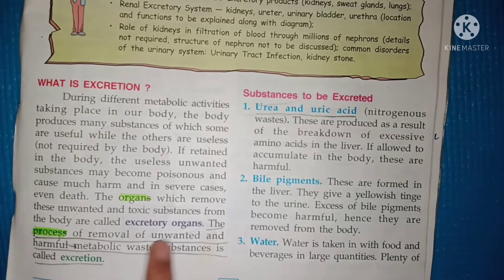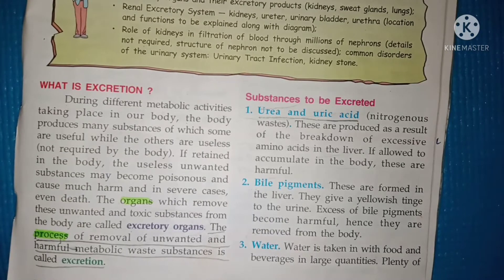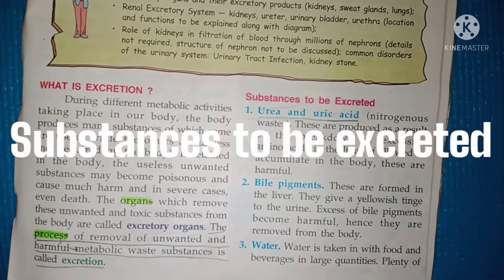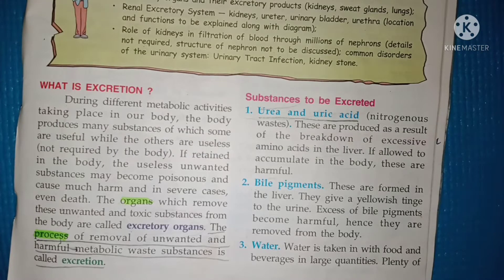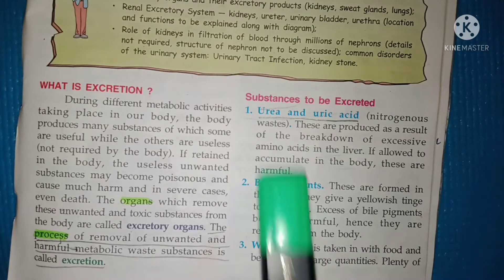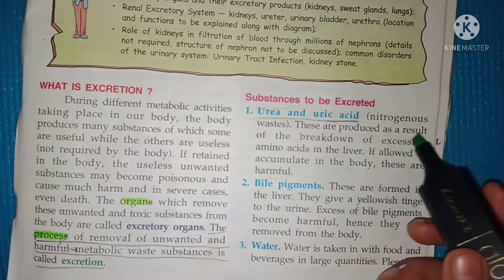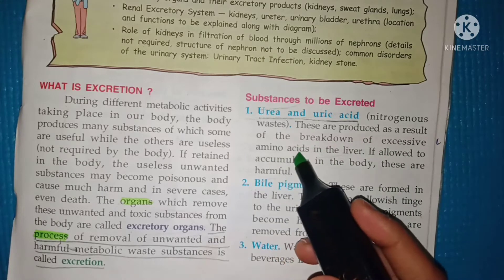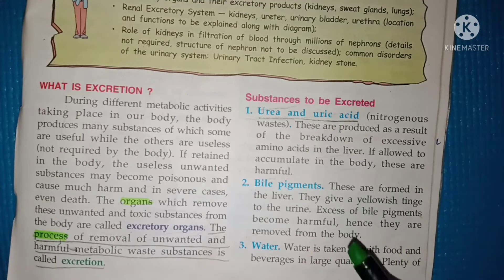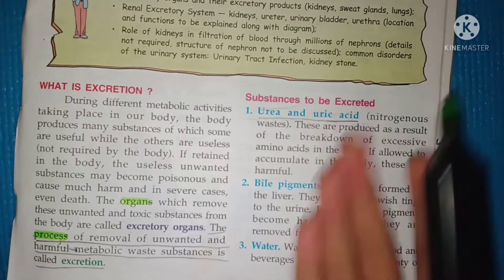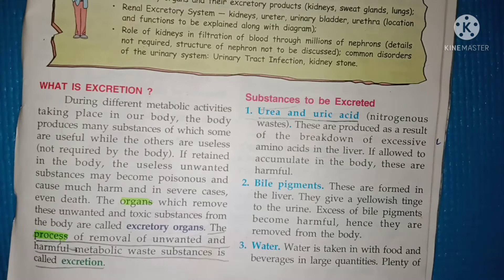Now, the substances that must be excreted — the first is urea and uric acid. These are nitrogenous waste and are very harmful. They are produced as a result of breakdown of excessive amino acids in the liver. Due to the breakdown of amino acids, urea and uric acid are formed. If accumulated in the body, they can cause many harmful diseases.